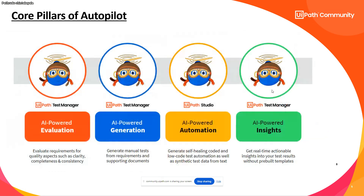There are four core pillars of Autopilot for UiPath Test Suite. First, in UiPath Test Manager, we have AI-powered evaluation — which evaluates requirement quality, consistency, and whether all acceptance criteria are covered — and AI-powered generation, which generates manual test cases from requirements, including step-by-step descriptions of how test cases should be executed.